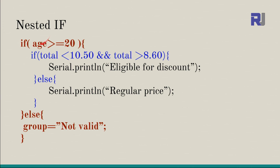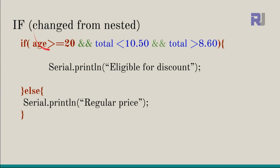This is called a nested if. We have an outer if checking age >= 20. If true, the program enters this block which contains another if with its own condition — for example, if total is less than 10.50 AND total is greater than 8.6 (i.e., total is between 8.6 and 10.5), then print 'eligible for discount.' If the inner condition is false, print the inner else text.